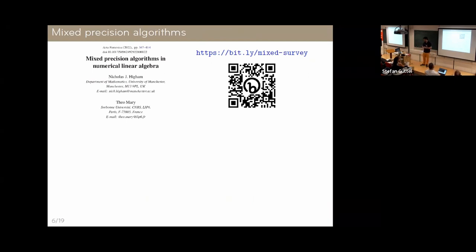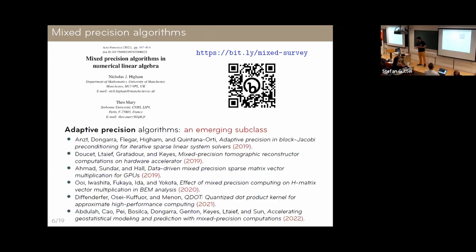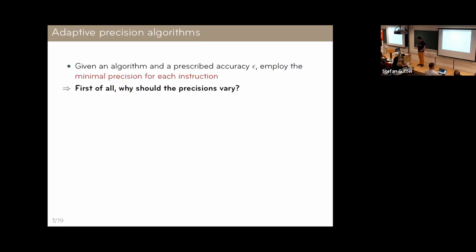We're going to use something called mixed-precision algorithms. There are actually many different ways of mixing precisions together — Nick Higham and I have a survey that describes and classifies different approaches, so you can check that out. In this presentation, I'm going to focus on a particular subclass we call adaptive precision. There are a number of recent papers that enter this framework, all from the last couple of years.